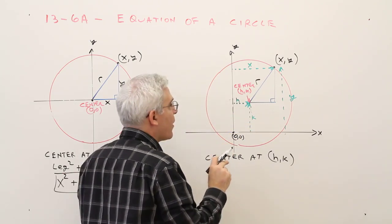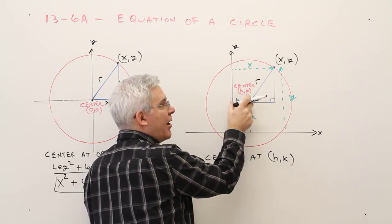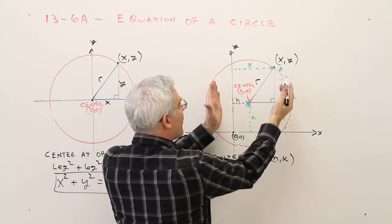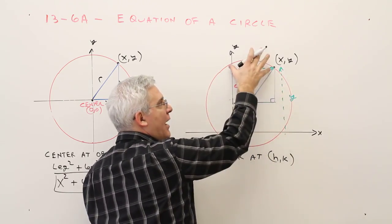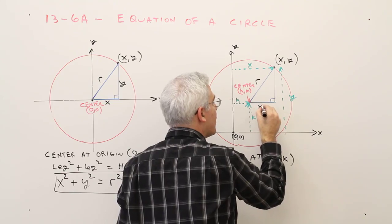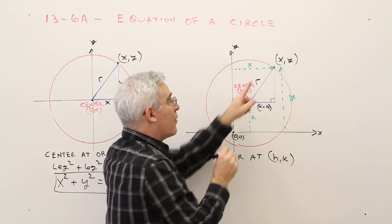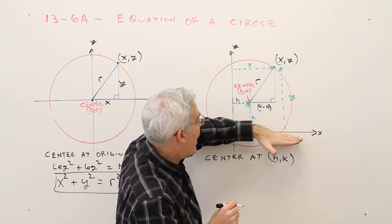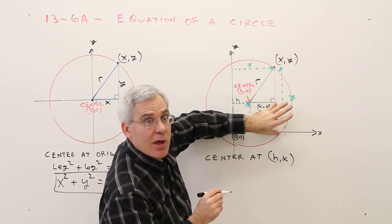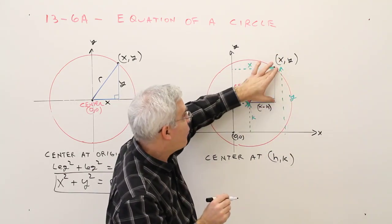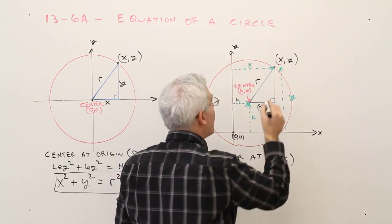So watch what I'm going to do. I'm h units out here. I'm x units all the way out here. So this right here would be x minus h. Over here, I'm y units up to this point. I'm k units up to this point. So this right here will be y minus k.